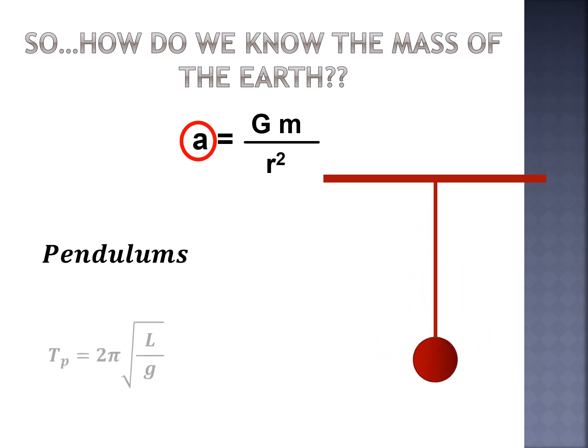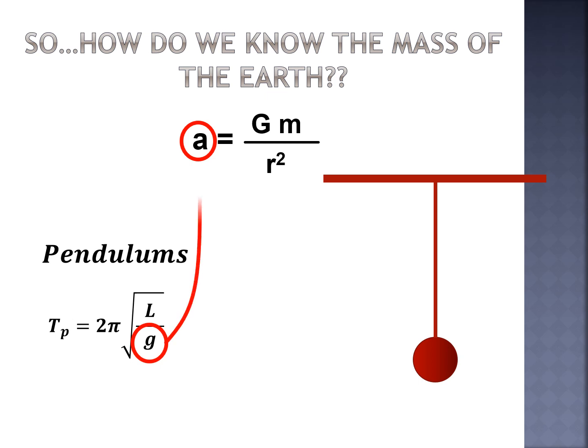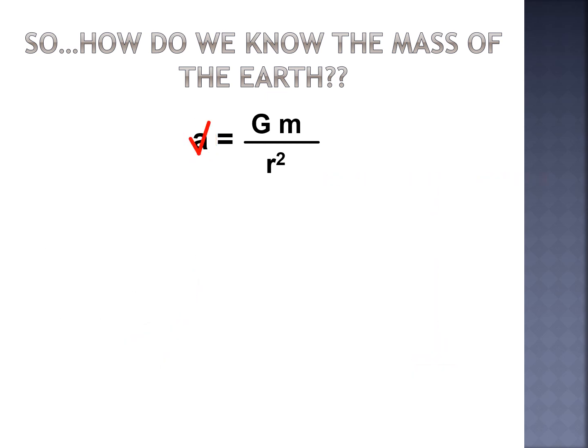A pendulum's oscillation back and forth takes a certain amount of time dependent on the length of the pendulum and the acceleration due to gravity. So if we can calculate the period with a stopwatch and measure the length, we can determine the acceleration due to gravity pretty easily — practically inside the classroom. That acceleration is what we'll use in this equation.